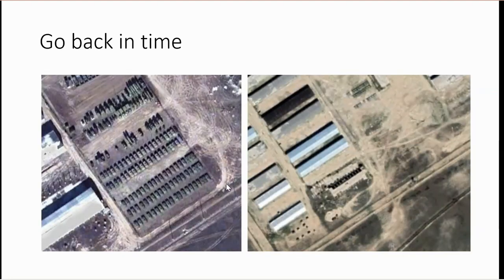Sometimes you have to go back in time, because Google Earth only flies over once every so often. In the right picture we have a military base but can't see much, but if we go a little bit back in time we can actually see lots of tanks and other military vehicles.